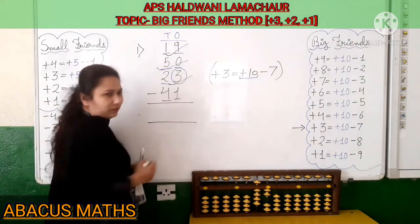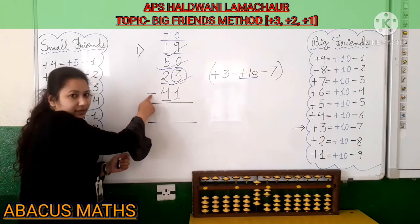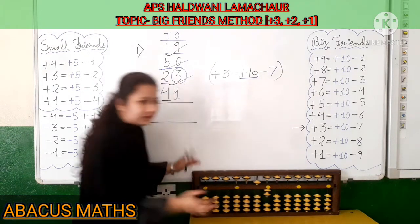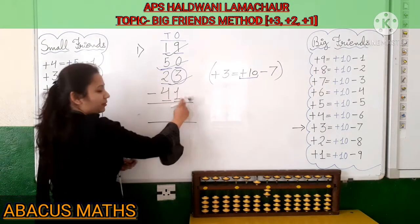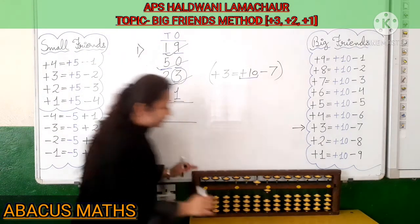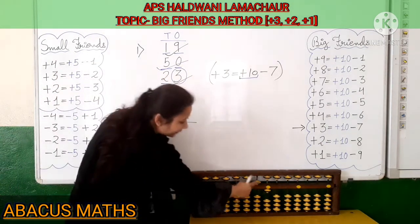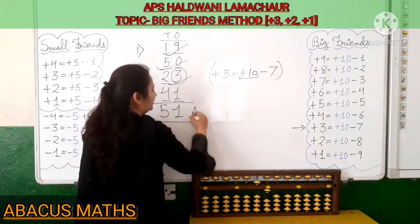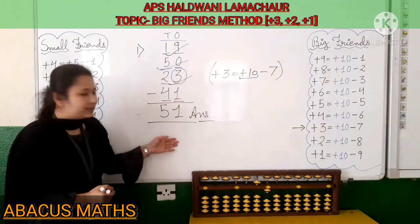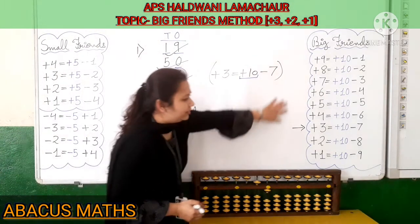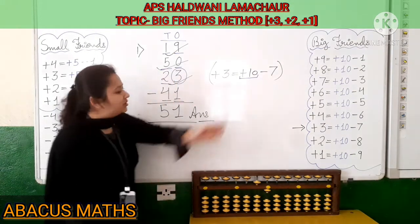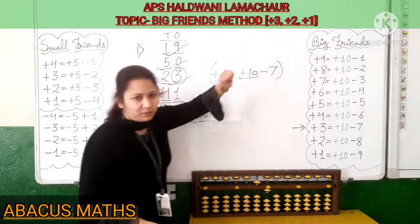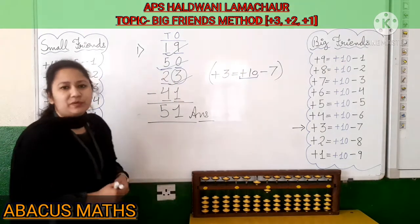Now next, minus 4 — just take care of the sign, it is minus 4. There are 4 beads, so minus 4. Then minus 1. And your sum is completed. Now count: 5 in the 10's slot and 1 in the 1's slot, so your answer is 51. I hope you have got the sum. It is the same as the others, only the difference is we have used the plus 3 addition formula today. Now we will move to our next sum.